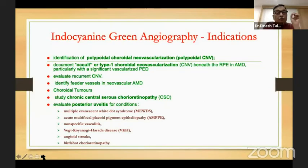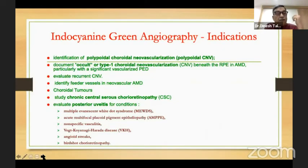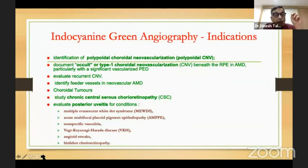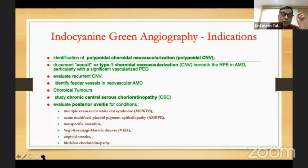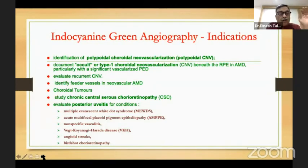What do we use ICG for? Most often nowadays it's used for PCV, and also for documenting occult CNVMs — sometimes you can pick up the CNV directly. It was also previously used to identify feeder vessels for neovascular AMD. It's good for diagnosis of choroidal tumors, for studying chronic central serous chorioretinopathy, and of course for posterior uveitis — virtually all the conditions you can name, ICG would have a role.